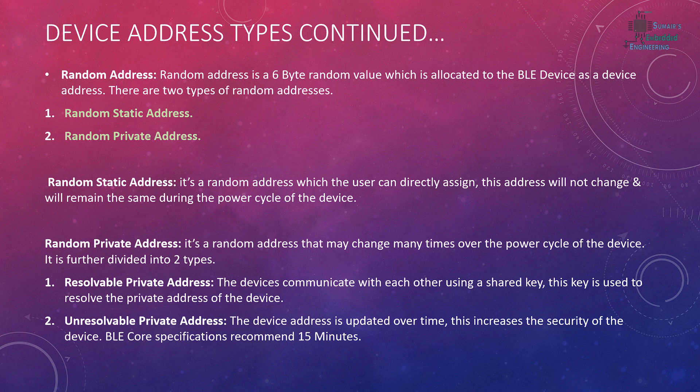The random address is further divided into two types: random static address and random private address. The random static address is one that the user can directly assign to the device. Importantly, this address will not change — it remains the same across the power cycle of the device. It is a 48-bit value that never changes.